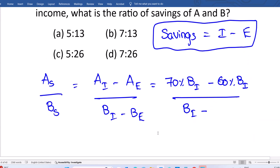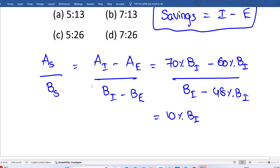Now you can see numerator 10% of B income, denominator 52% of B income. Cancel as you mentioned, we got option C. B income cancels. This is 2 times 5, 2 times 26. So 5 upon 26, option C is correct.